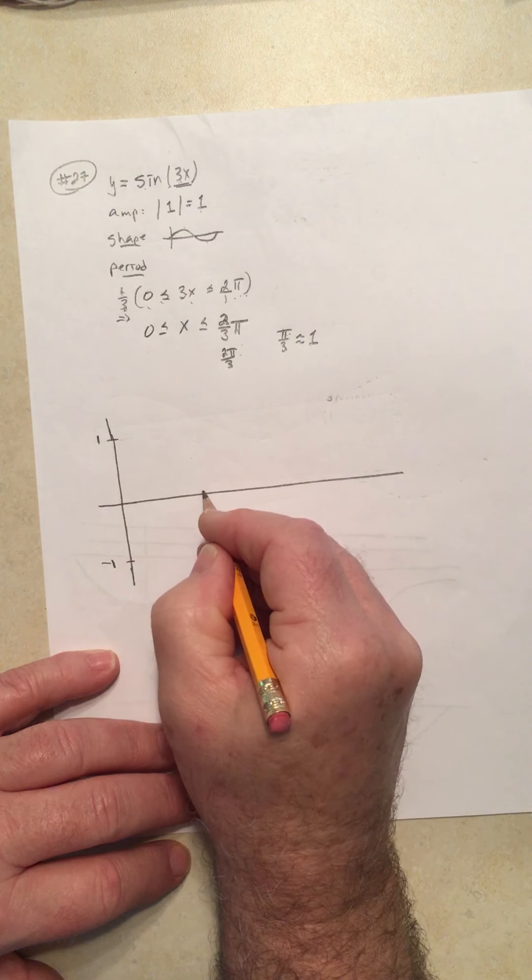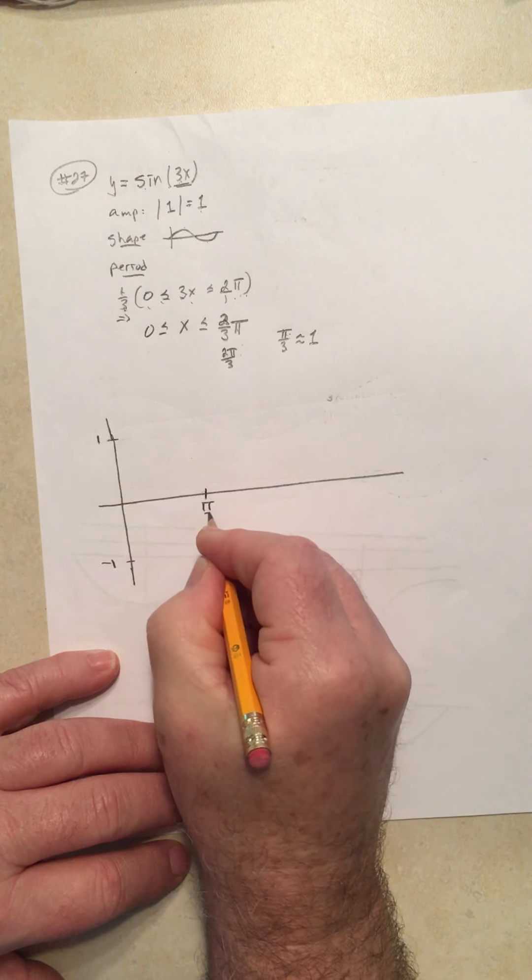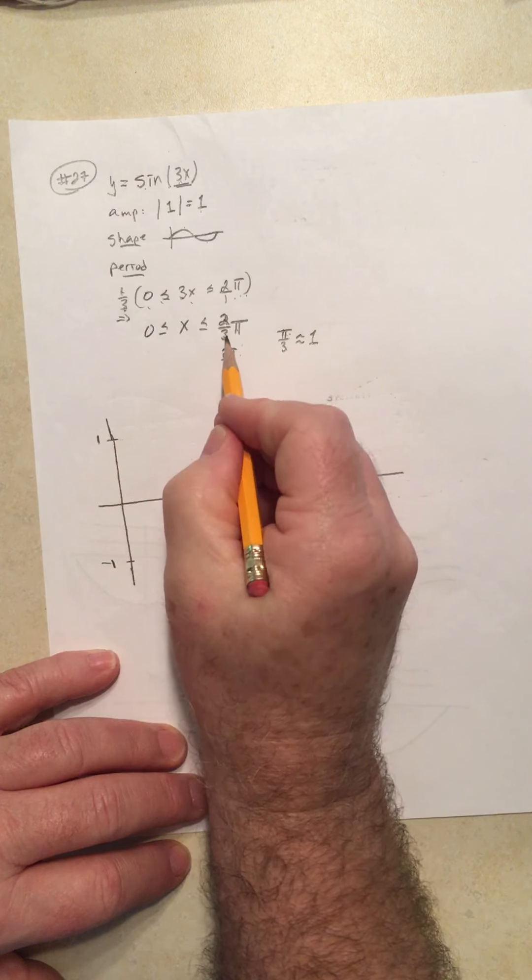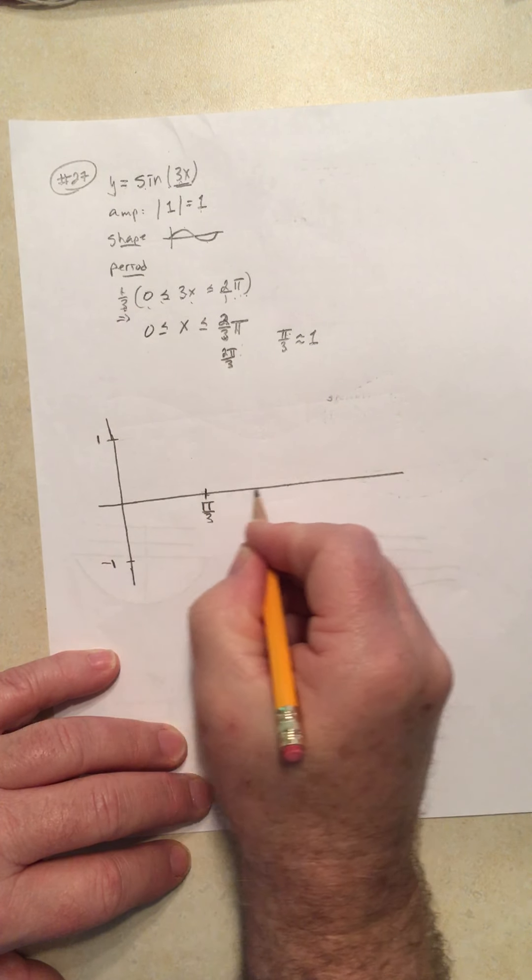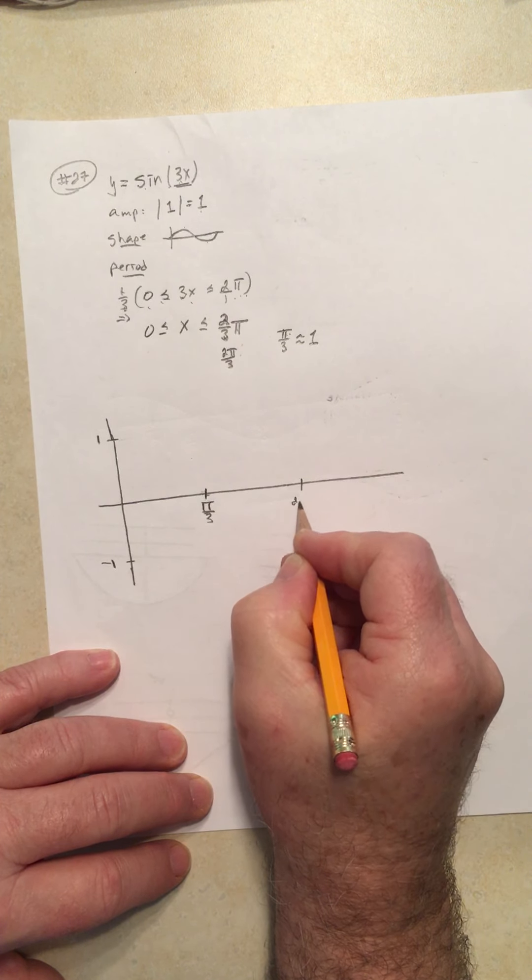So this is approximately the same distance. This is 1, so this is a little bit more than 1, so this is π over 3. I need 2/3, I need 2π over 3, 2/3. So there's 1/3, approximately here is 2/3.